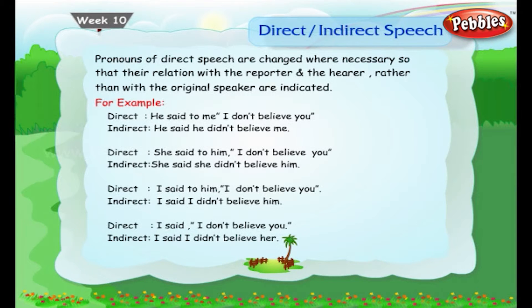Direct: She said to him, 'I don't believe you.' Indirect: She said she didn't believe him. Direct: I said to him, 'I don't believe you.' Indirect: I said I didn't believe him. Direct: I said, 'I don't believe you.' Indirect: I said I didn't believe her.